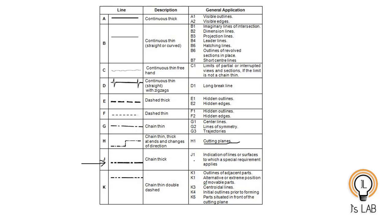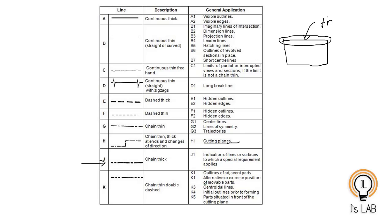The chain thick line — Type J — is used for indication of lines or surfaces to which a special requirement applies. For example, if you have a surface where you want to specify that additional finishing operations are required, you represent that part using a thick chain line.